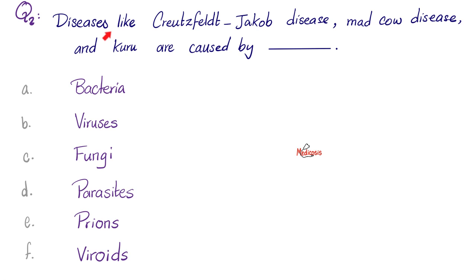Question number two. Diseases like Creutzfeldt-Jakob disease, mad cow disease, or spongiform encephalopathy, and Kuru are caused by what? Please pause. And the answer is, these are prion diseases.